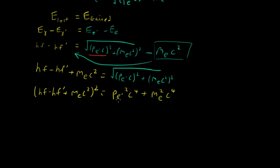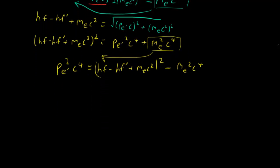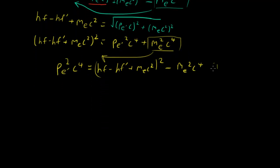Now, the last step to isolate this variable is to bring this value over to that side. And we have isolated this component. So (p_e')² c⁴ = (hf - hf' + m_e c²)² - (m_e c)⁴. Now that we have that, let's move on to the conservation of momentum. We'll leave this in for now, and let's call this equation number 1.